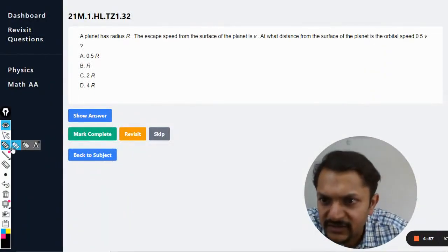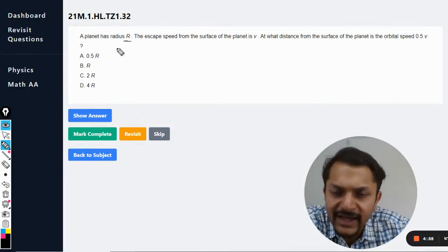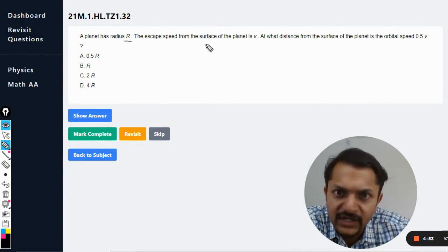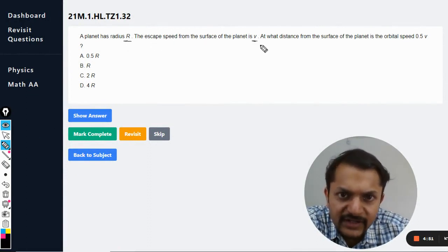Okay students, let us see what is there in this question. The planet has radius capital R, the escape speed from the surface of the planet is v.